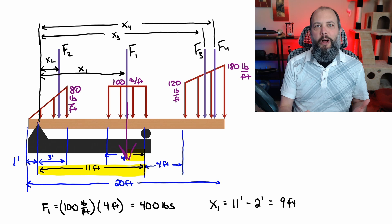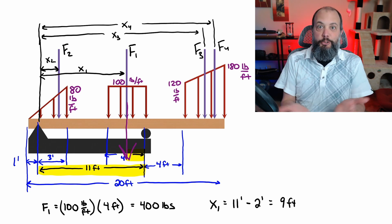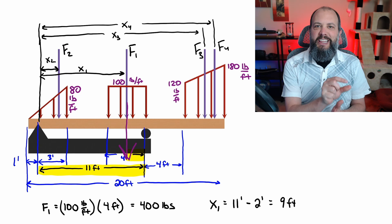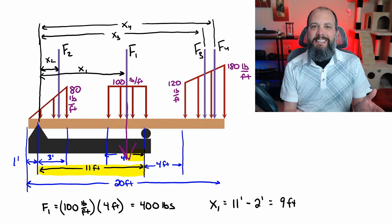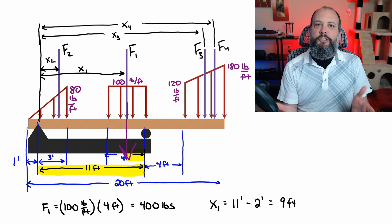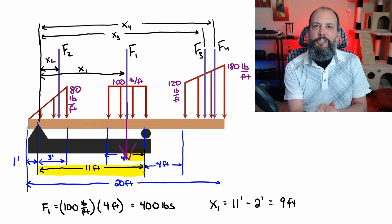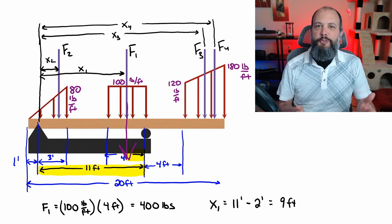To find the distance X1, the centroid of a rectangle is directly in its own center. So using all the distances at the bottom of the figure, there's an 11-foot distance that measures all the way to the right side of that distributed load. So then I subtract off two feet, which is the distance from the right side back to the center. And I get a value for X1 of nine feet.